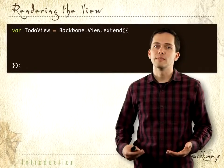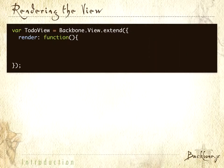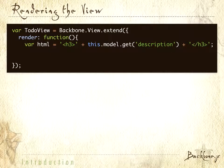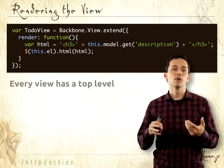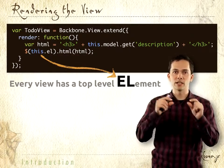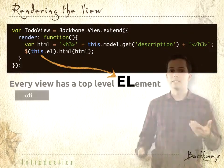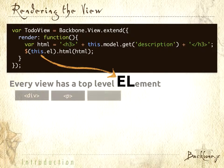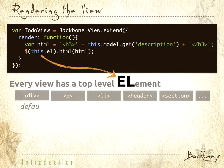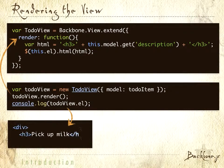We need our view to render out some HTML for our TodoItem. To do that, we define the render function. Inside the render function, we get our description out of the model and create some HTML, then set the HTML of that view element. Every view instance has its own view element — that's the 'el' for element. A single instance is associated with an element, which is an HTML tag of some sort. It could be a div, which is the default, but also a paragraph, an li, a header, or whatever you want. When we instantiate the view, we call that render function, and we can print out the resulting HTML to the console by calling todoView.el.